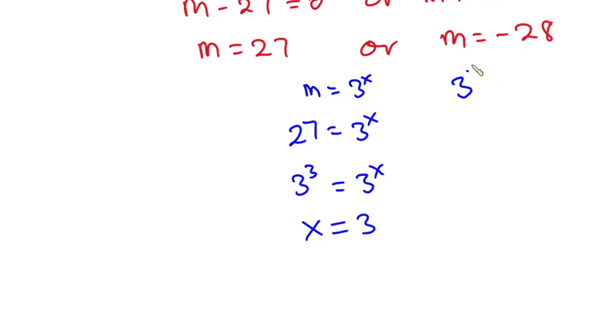Now from here, when m is equal to negative 28, we have 3 to the power x equals negative 28. Now here's the deal: 3 to the power x is greater than zero. So for real solutions, no matter what you do to 3 to the power x, you'll not be getting negative, so this equation cannot be solved.